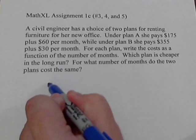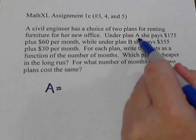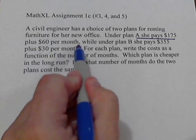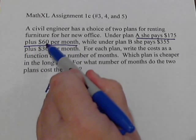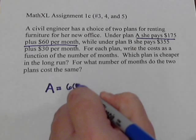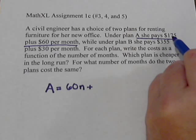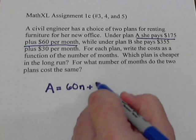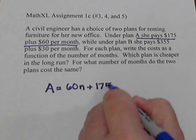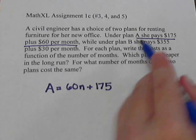So we need two equations. We'll call the first one A. And since this is a linear equation for A, we see the rate of change would be $60 per month. So we have 60, and let's use n for the number of months. And the starting value would be 175. So there's our formula for plan A: A = 60n + 175.